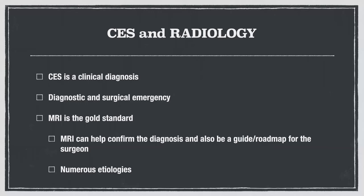In recap: cauda equina syndrome is a clinical diagnosis. Clinicians will request an emergent MRI when patients present with saddle anesthesia, bowel or bladder problems, urinary retention, and leg pain — these are the buzzwords that mean the MRI needs to happen as soon as possible. When those symptoms are provided in the history, the radiologist can state findings are consistent with cauda equina syndrome. Without those symptoms in the history, that terminology should not be used in the radiology report.